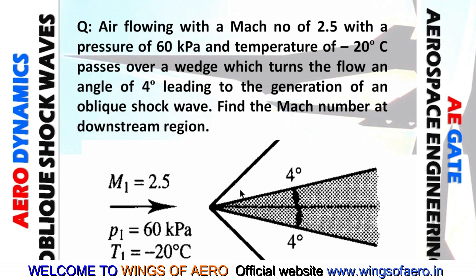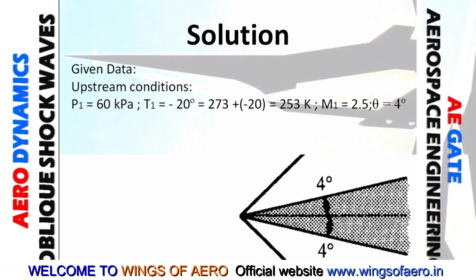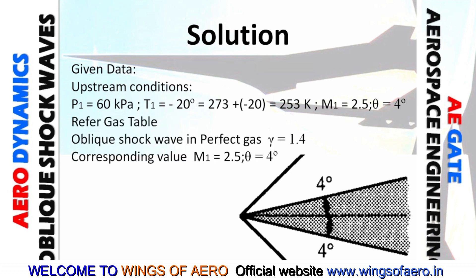Now for the solution. The given data: temperature is converted from degrees Celsius to Kelvin: minus 20 plus 273 equals 253 Kelvin. The upstream Mach number M1 is 2.5, and theta is 4 degrees, because the flow is deviated 4 degrees from the flow direction.